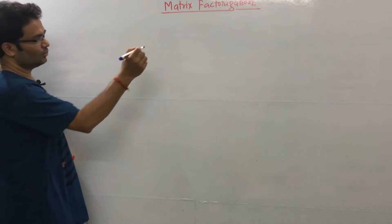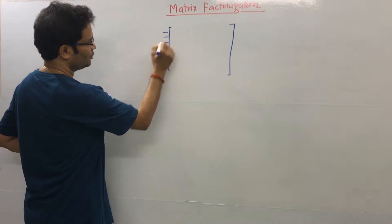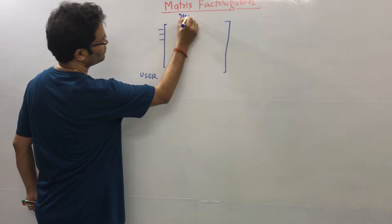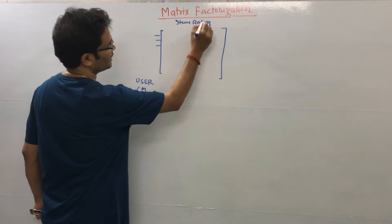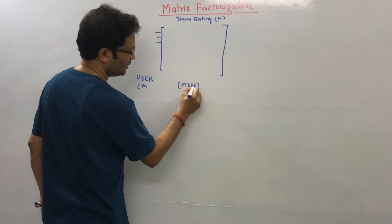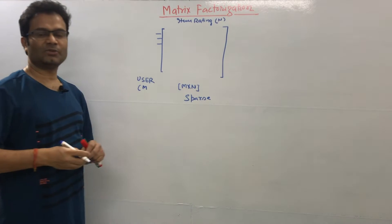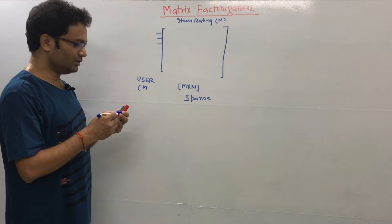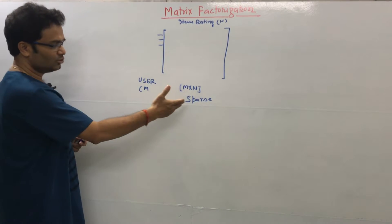In matrix factorization, what we do is make one matrix where in the rows we place all the user information and in the columns we keep all the item ratings. Suppose we have M users and N items, giving us an M×N matrix. But this matrix is a sparse matrix because most of the row and column values are empty — not all users have watched all movies or rated all items.